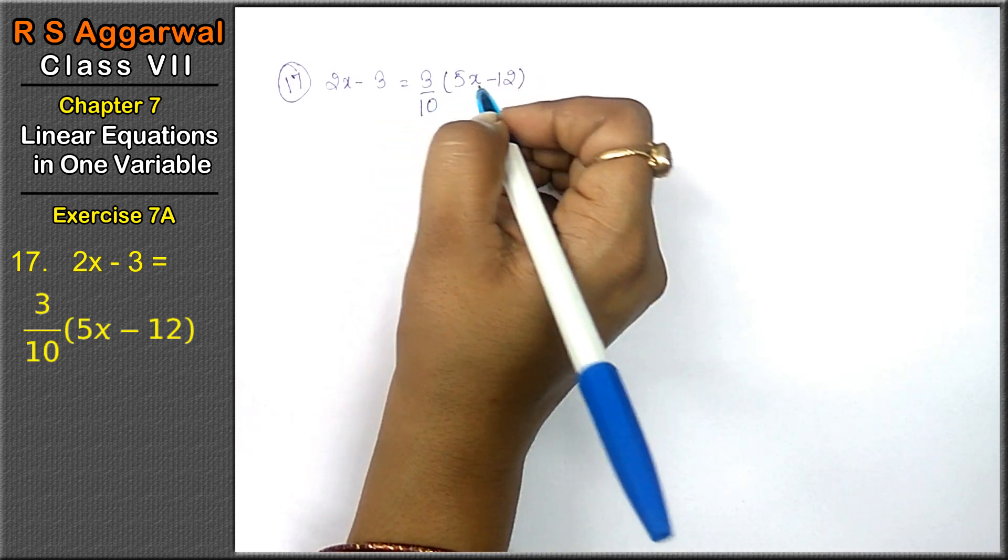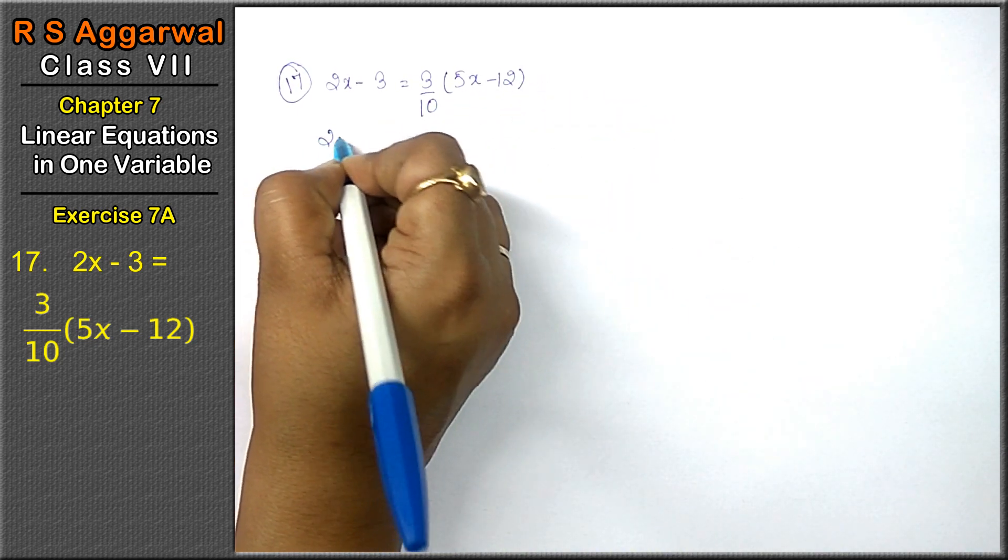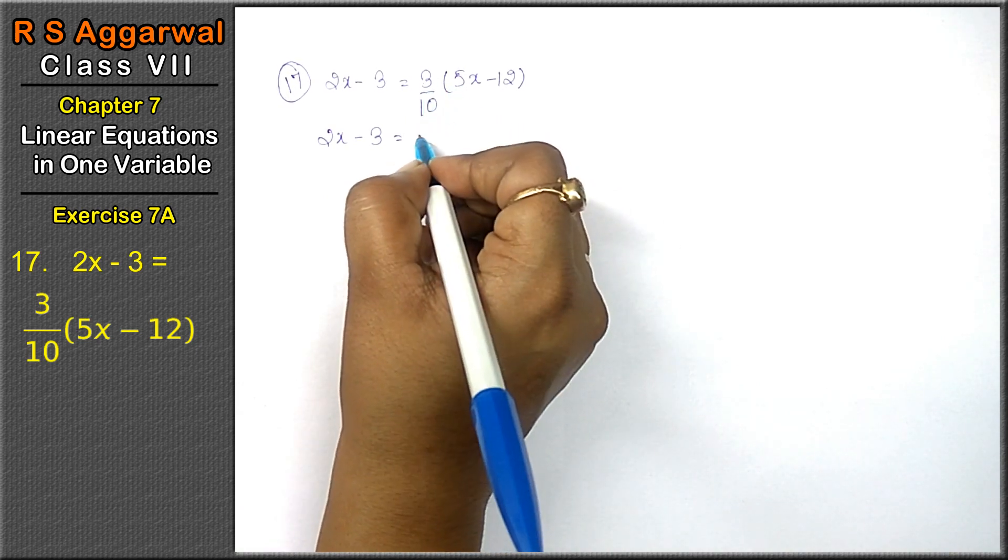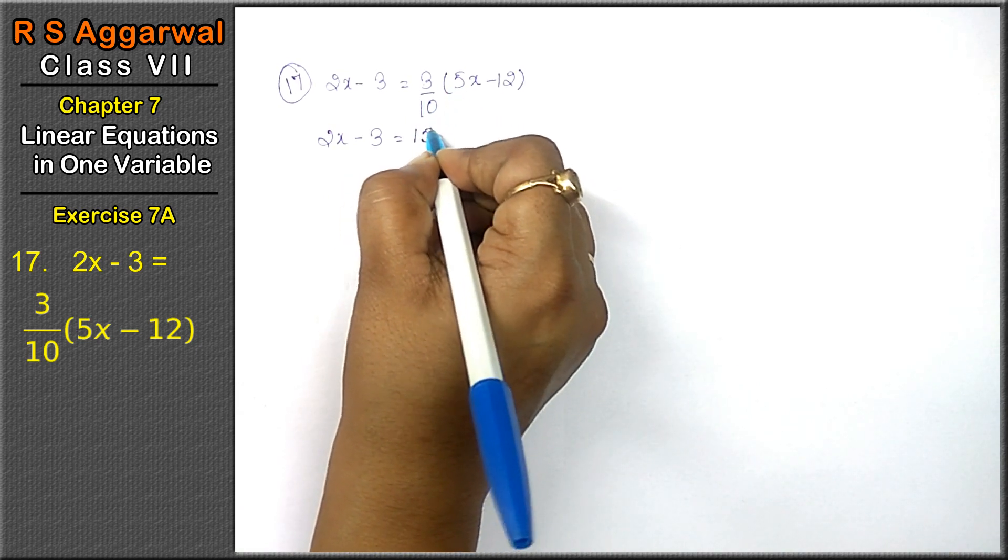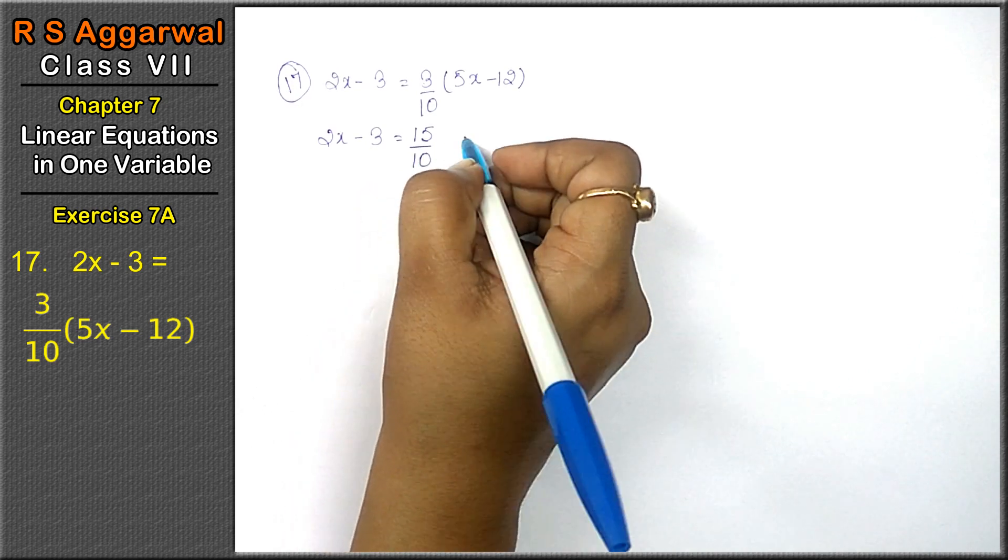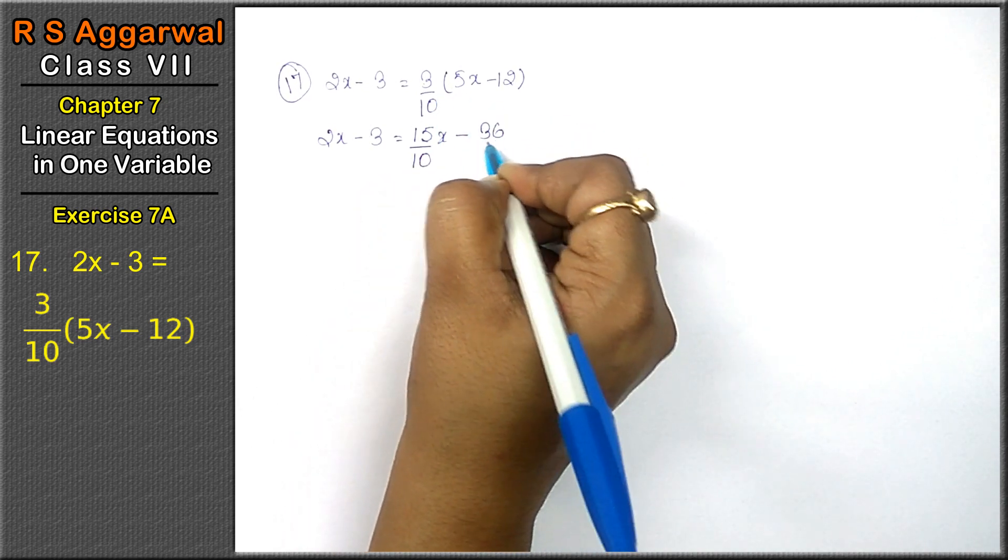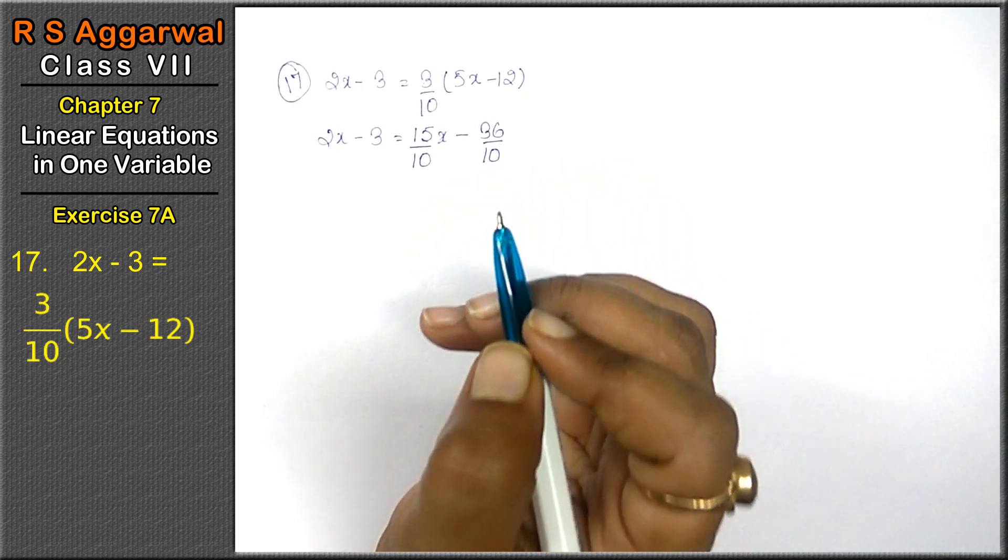Now friends, we open this bracket. The first step is to open the bracket. 2x minus 3 equals to the upper multiplication. 3, 5's are 15 upon 10. x minus 12, 3's are 36 upon 10.